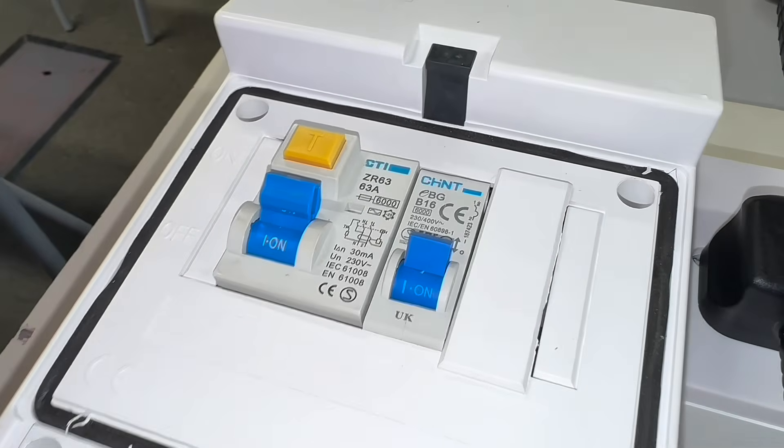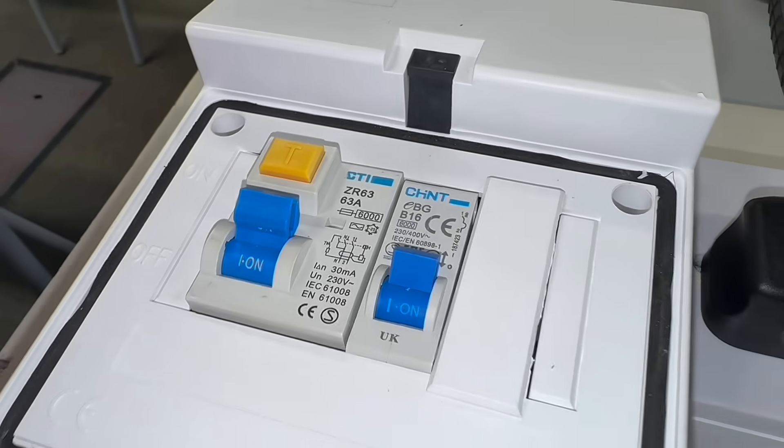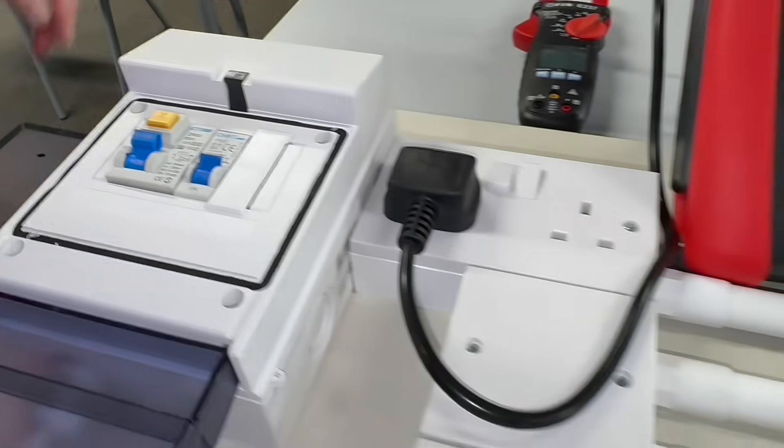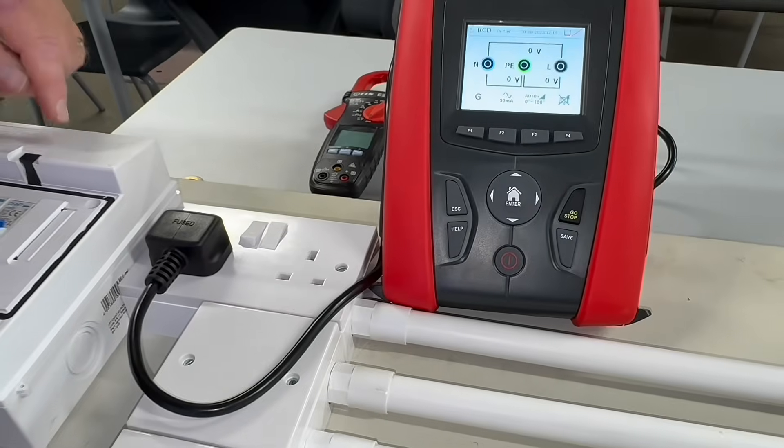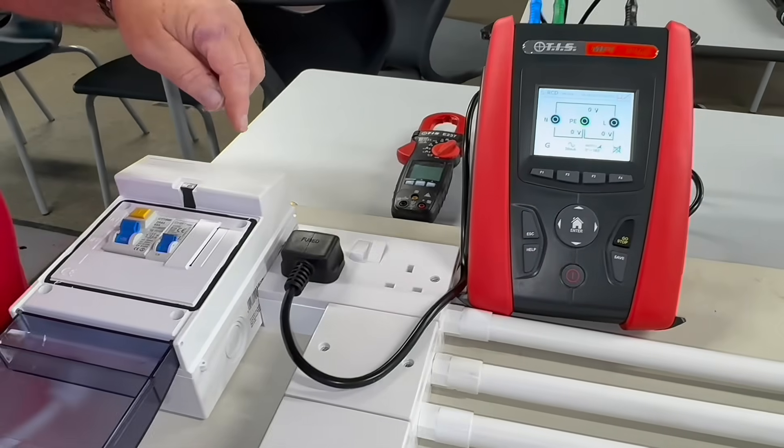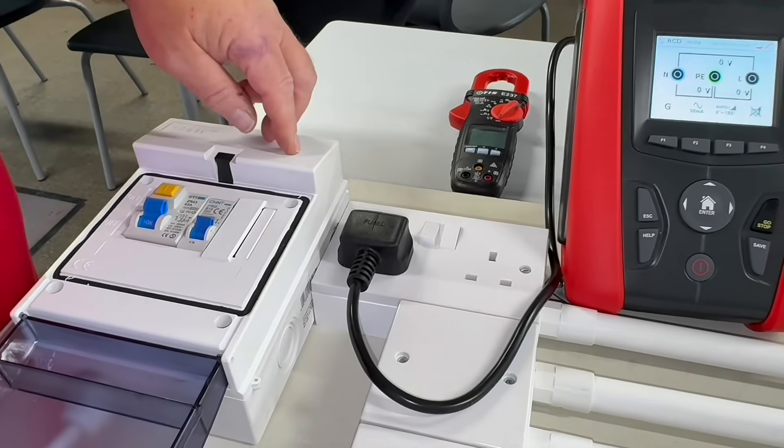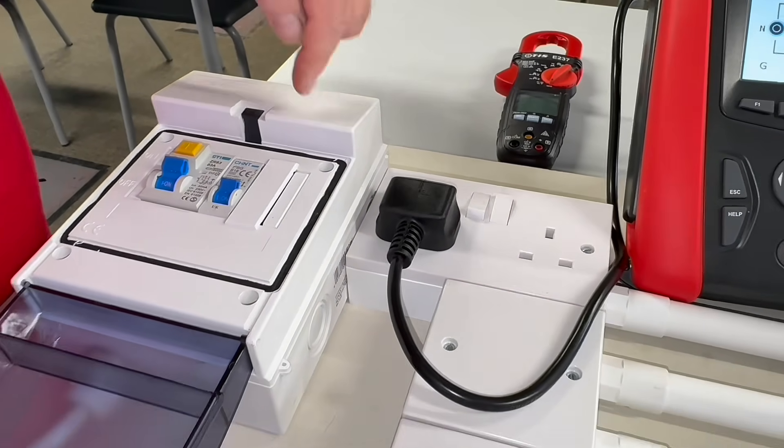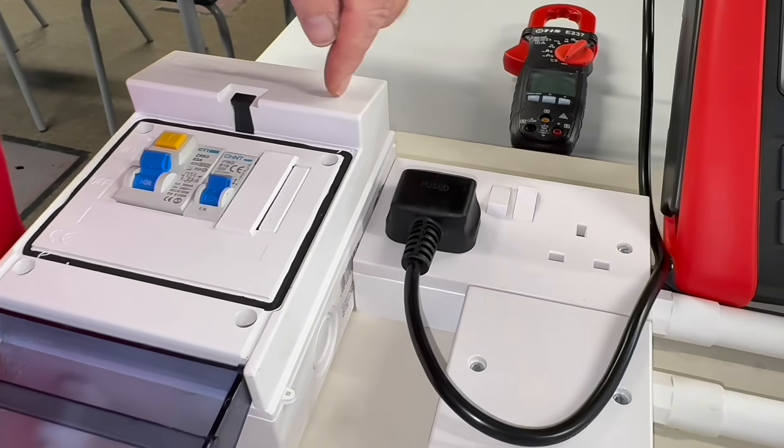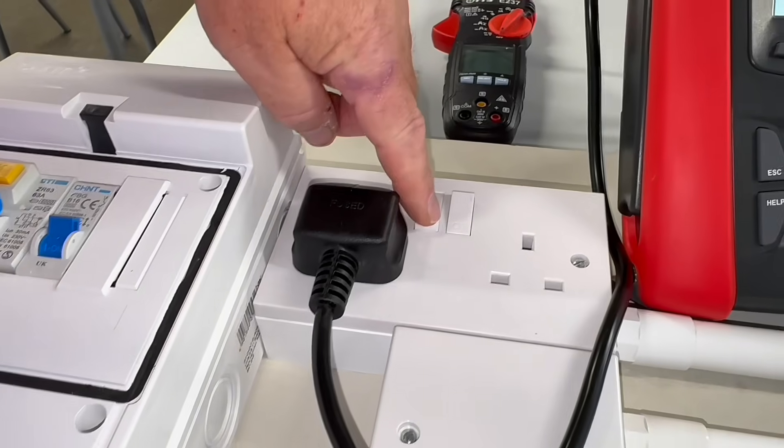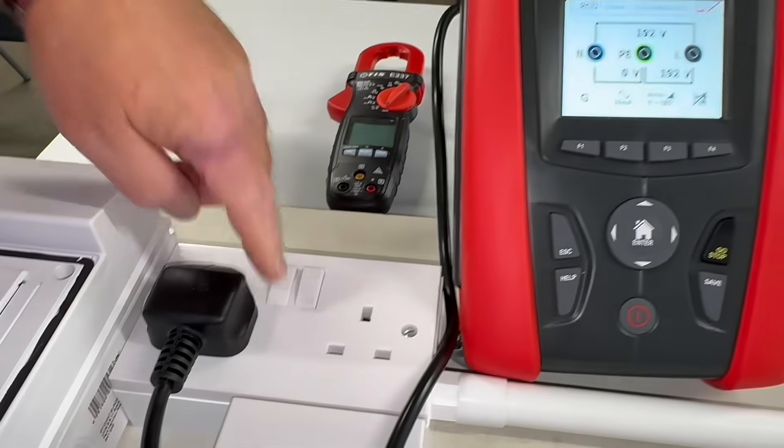Off cam, you've reconnected the consumer unit and you've energised it. What is the next measurement we're going to take, Chris? OK, Gary, so what we're going to do is we're going to measure the actual voltage that's coming in from the supply. Now, this socket outlet is directly connected to the miniature circuit breaker right at the origin of the supply. So once I turn this on...